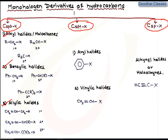The second category involves sp2 hybridized carbon attached to halogen. This includes aryl halides, where X is directly attached to the aromatic nucleus, and vinylic halides (also called alkenyl halides), where X is attached to the sp2 carbon of a double bond. In the third category, an sp hybridized carbon is attached to X — these are haloalkynes.